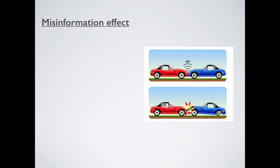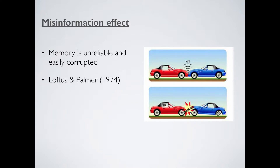Just very quickly as revision: Loftus and Palmer point out that memory is, first and foremost, unreliable and easily corrupted. In their study, if you ask how fast the cars were going when they hit each other, you get one speed estimate. Ask how fast they were going when they smashed into each other, and you get a much higher estimate. This small change in phrasing — what they called misinformation — means you misremember and report back something you think is accurate but is completely false. That's the misinformation effect.